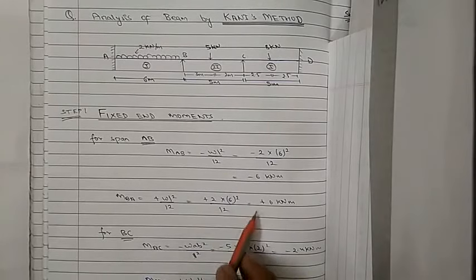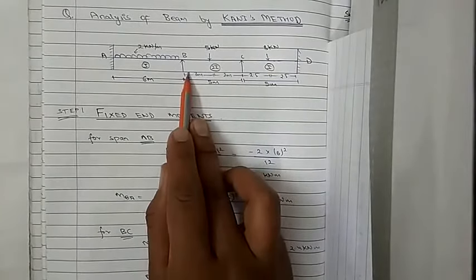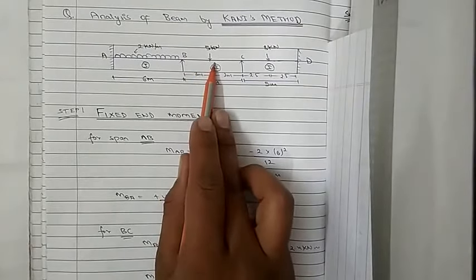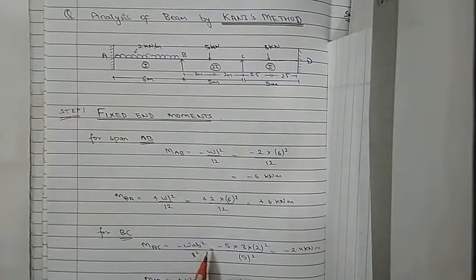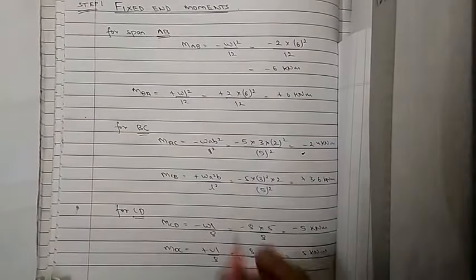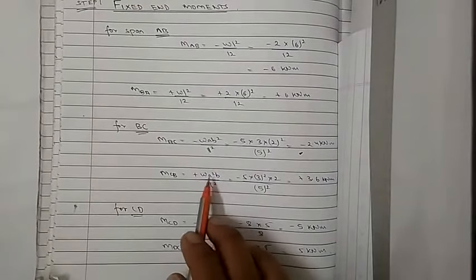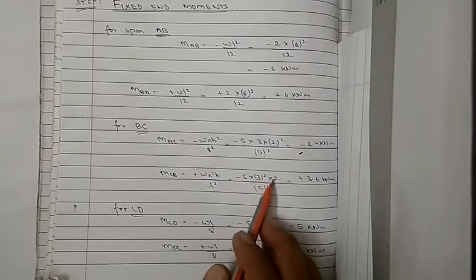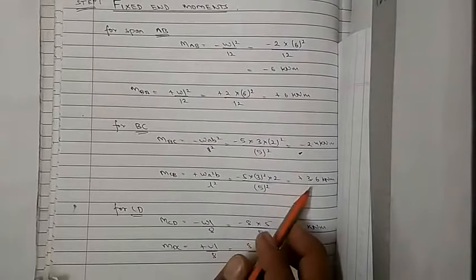For span BC, MBC equals minus W·a·b²/L² because it is a point load acting at different intervals. Substituting: minus 5×3×2²/5² gives minus 2.4 kN·m. MCB equals W·a²·b/L², so 5×3²×2/5² equals 3.6 kN·m.